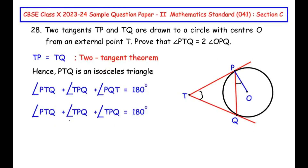Now let us go back to our question and consider triangle PTQ. According to the two tangent theorem, TP and TQ are tangents from the same external point T, so TP equals TQ. Since two sides are equal, triangle PTQ is isosceles.